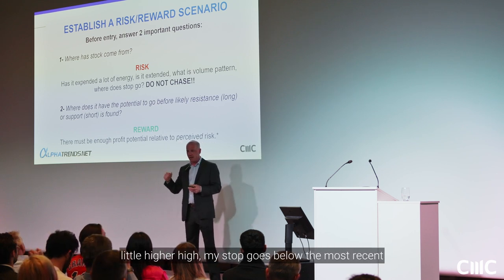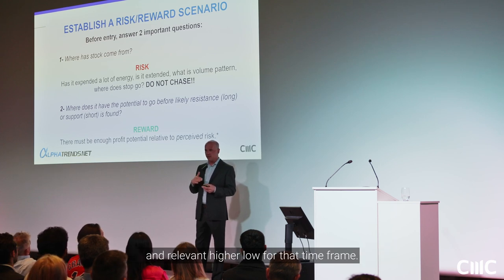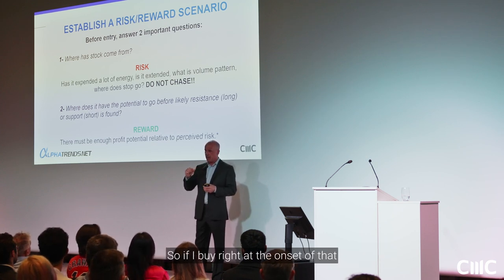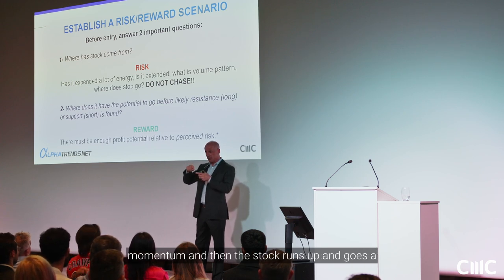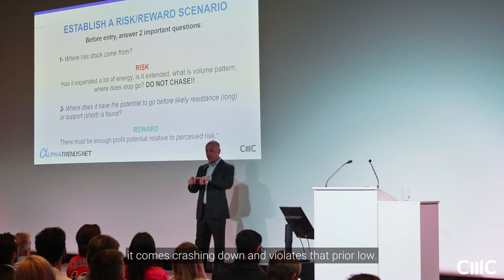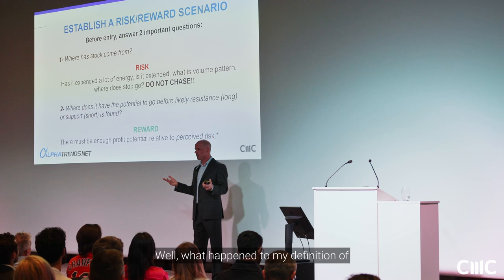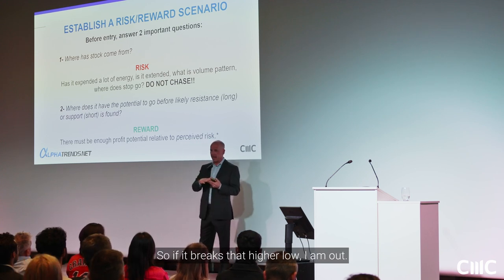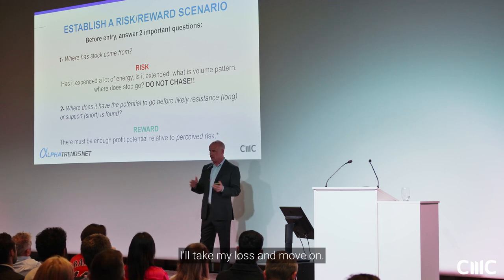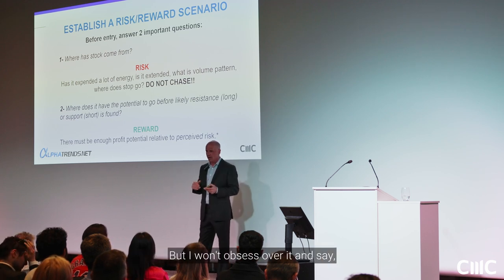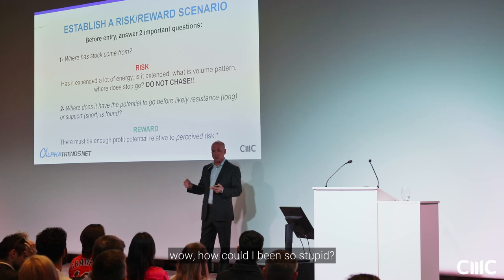As soon as I buy that first higher high, my stop goes below the most recent and relevant higher low for that timeframe, because I'm buying what I think is an emerging uptrend. If I buy at the onset of that momentum and the stock runs up, I'll take a quick third off. But if it comes crashing down and violates that prior low, my definition of trend — higher highs and higher lows — is broken, so I'm out.